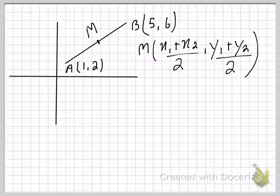So let's apply this formula. Now, A has coordinates 1, 2, so that means its x coordinate is 1. And B has coordinates 5, 6, so that means its x coordinate is 5.